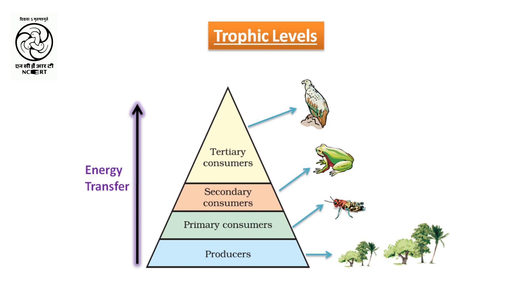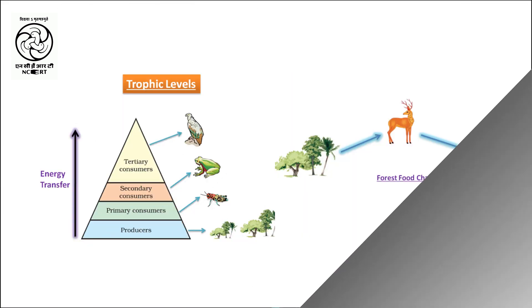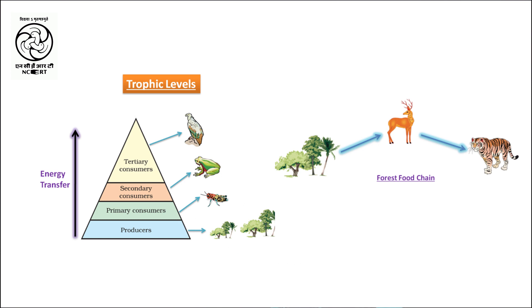Energy is higher at the lower trophic level, but tigers and lions, being carnivores, require more protein, therefore they feed upon herbivores. Secondly, tigers and lions do not have the enzymes required for the digestion of cellulose present in plants, therefore they can't directly feed upon plants.